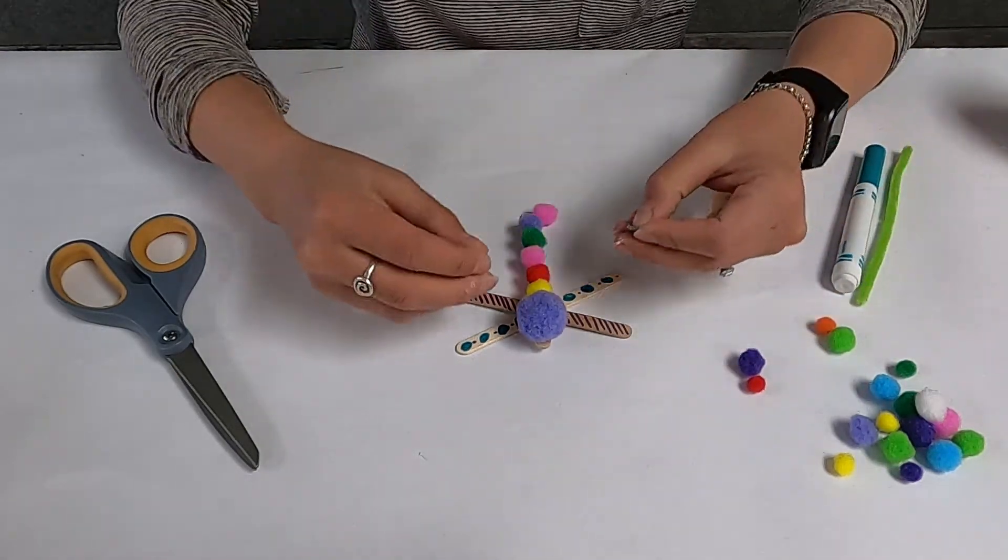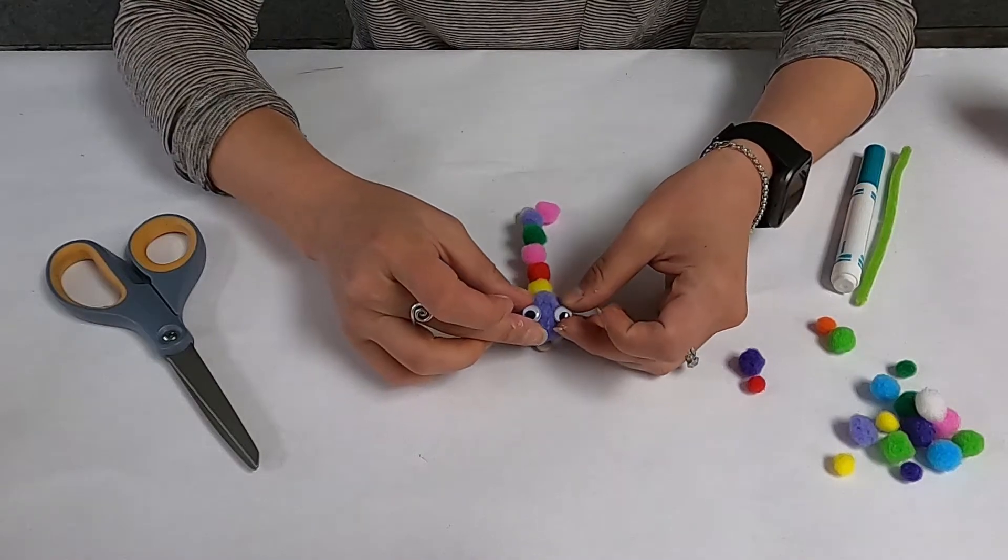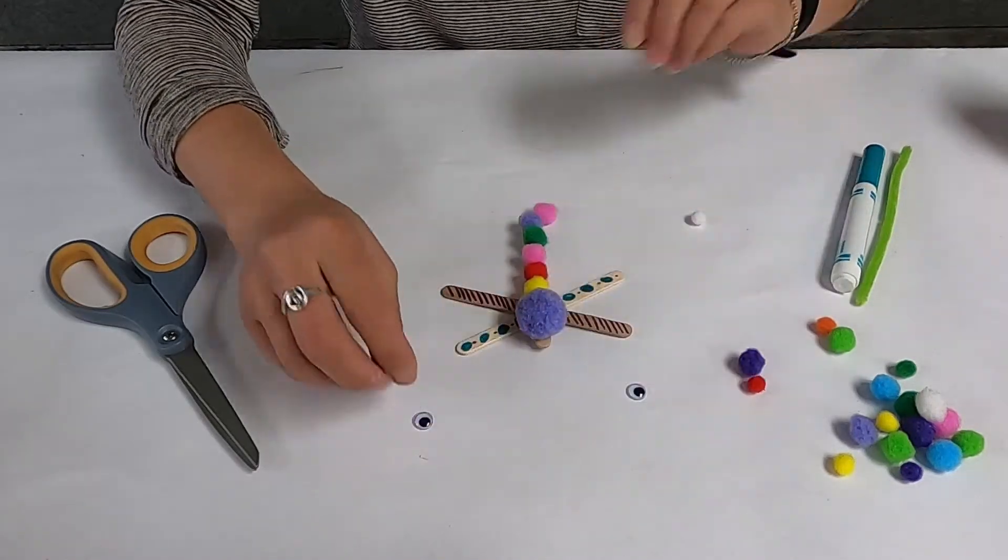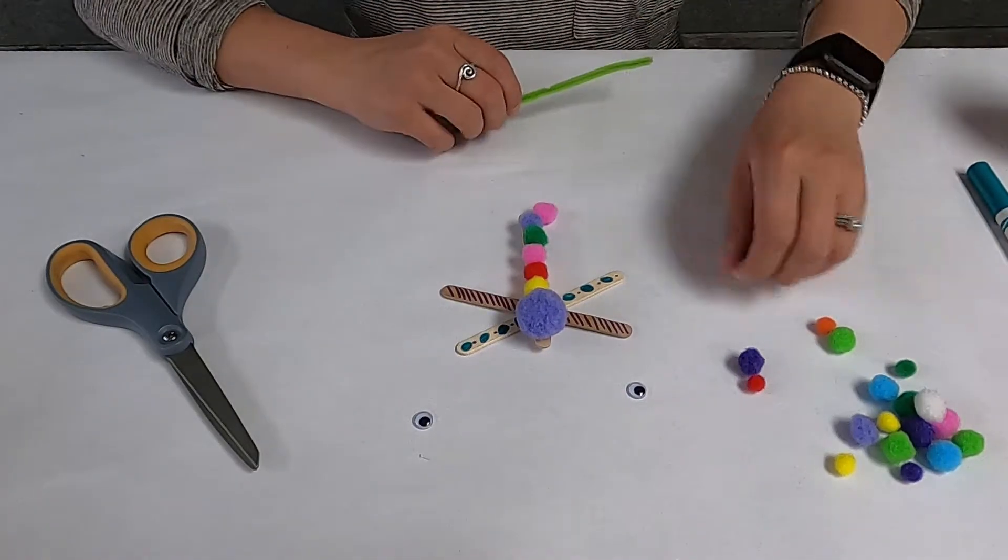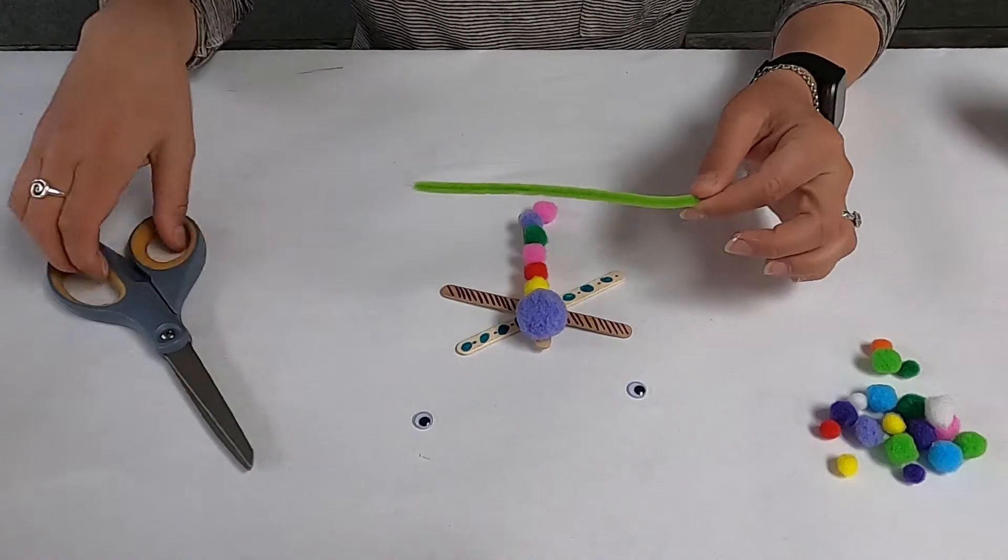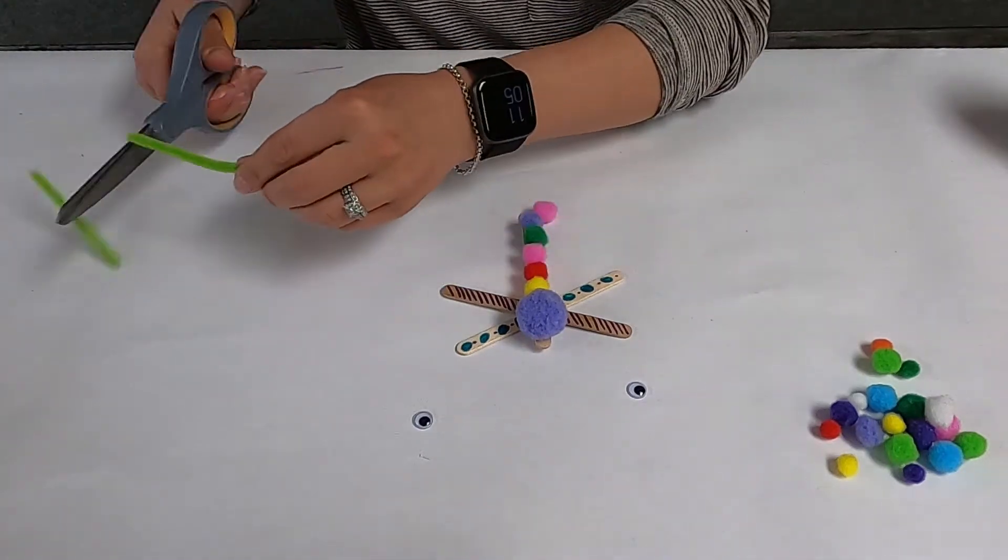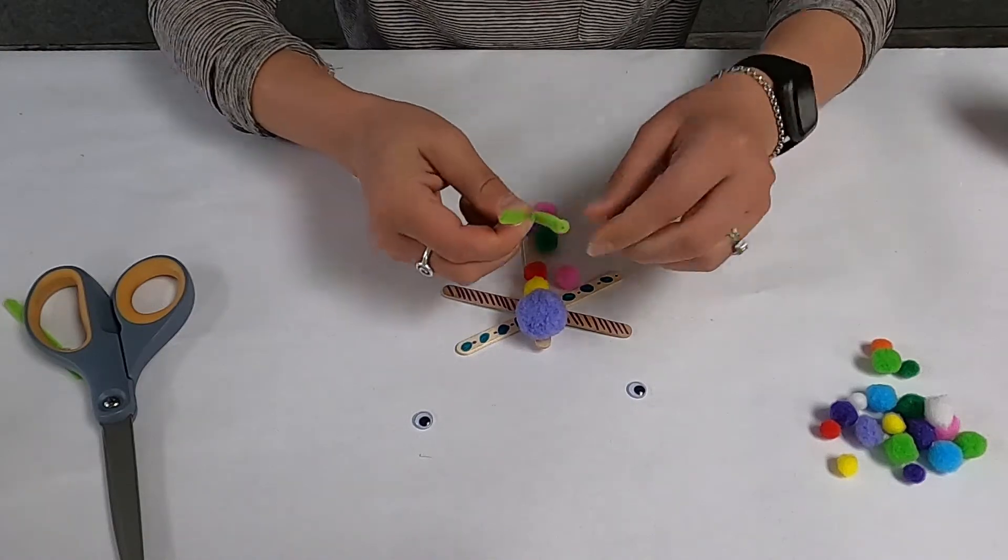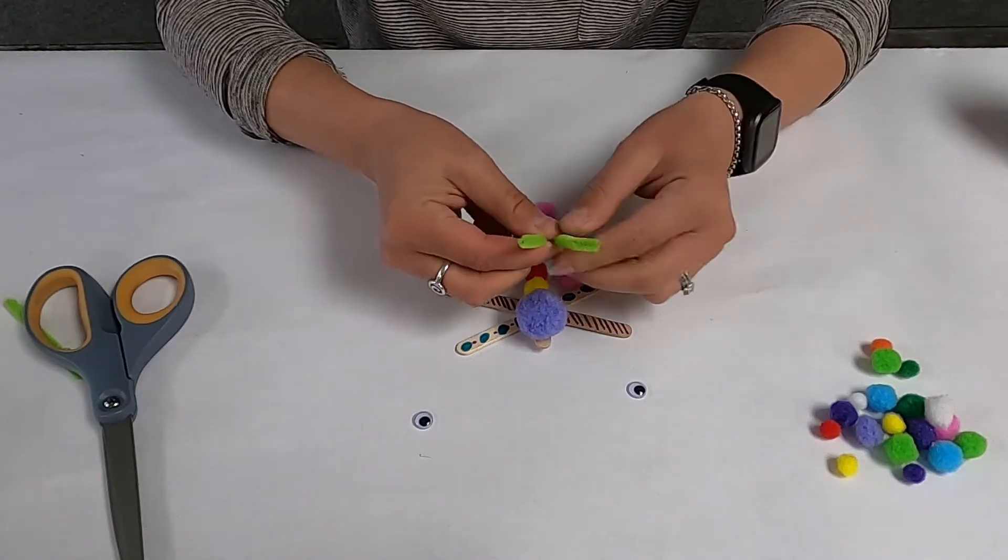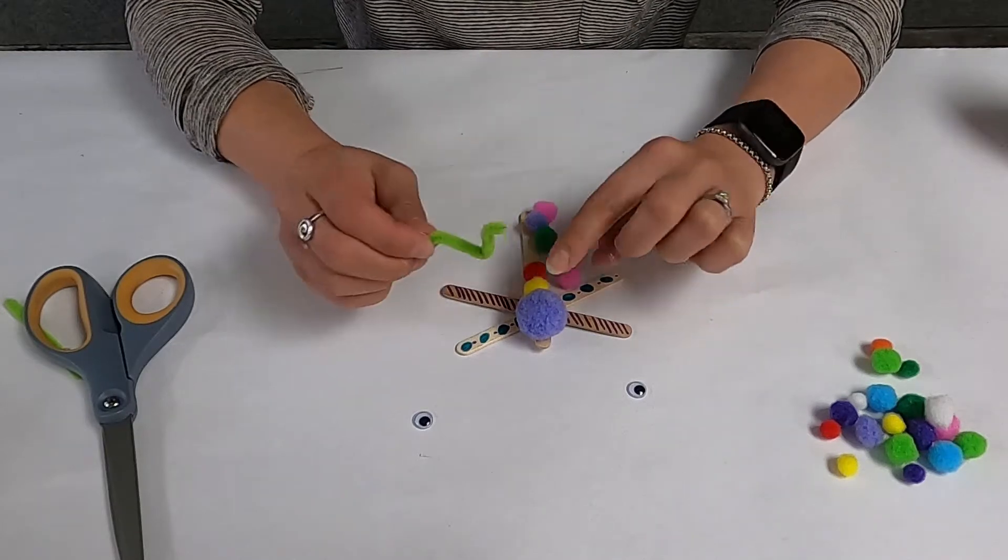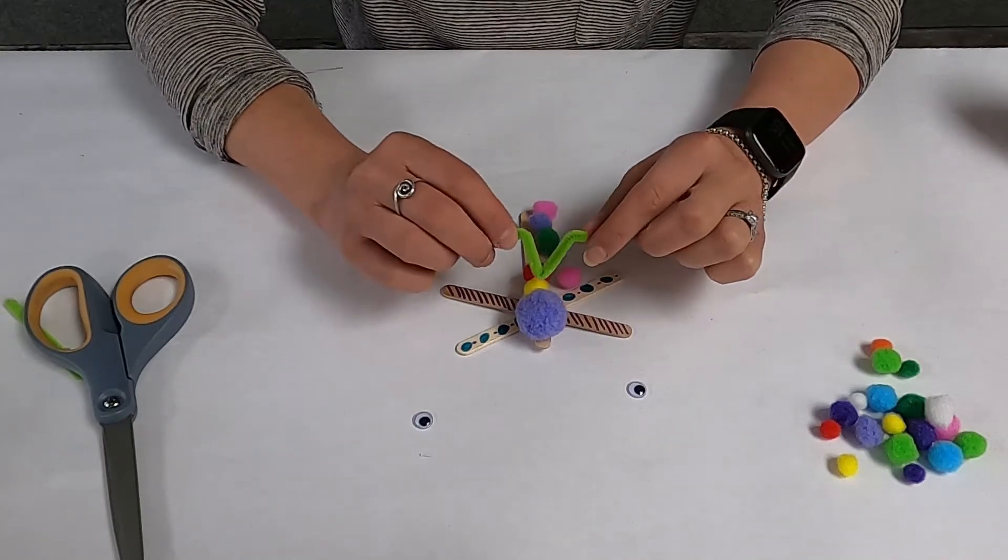And then the very last piece that I'm going to do is glue my googly eyes to the very front. But then also, I should say second to last, I'm going to put some antennas on. So I'm going to cut my pipe cleaner so it's about this long, and I'm going to bend it so it makes a little V and then bend it again. And I'm going to glue it right behind this first pom here.